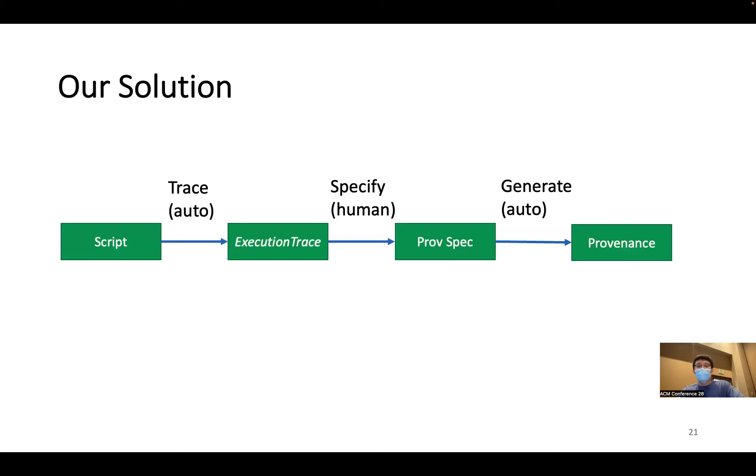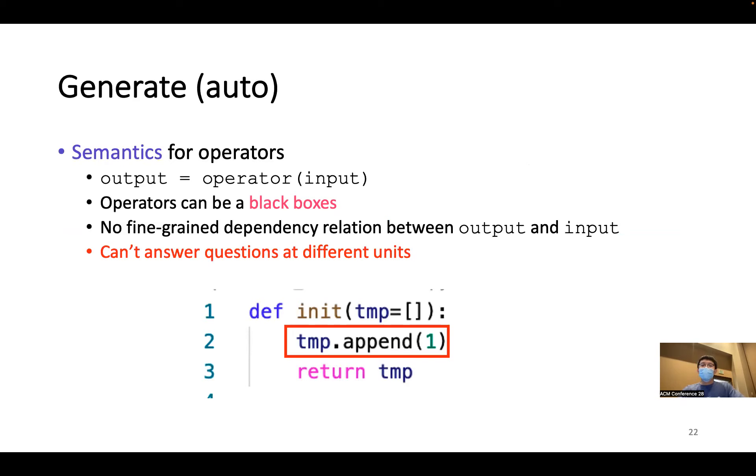And once we have the trace and the specification from the user, we can actually generate the provenance using this information. And note that for a script, this is traced only once, but it can allow users to specify multiple specifications and then generate the provenance on a need basis.